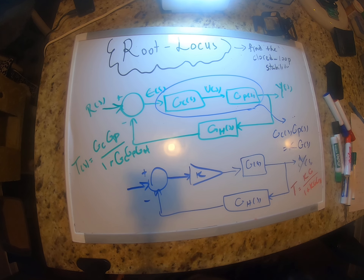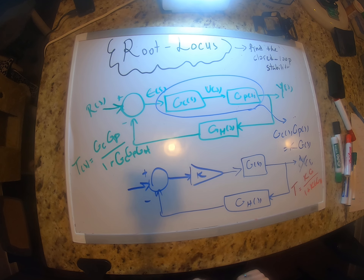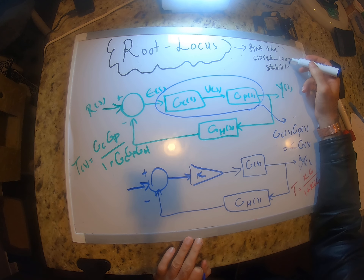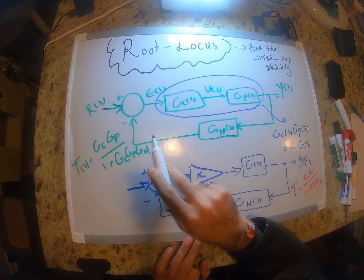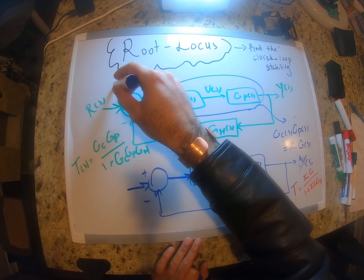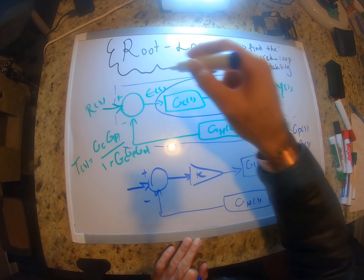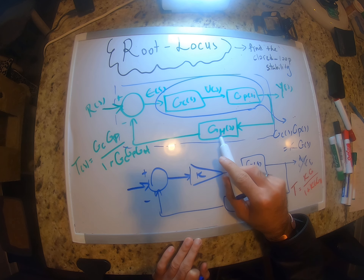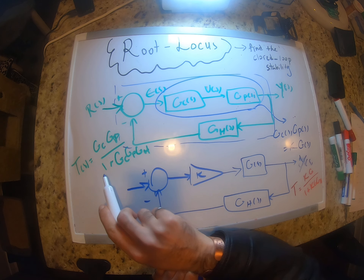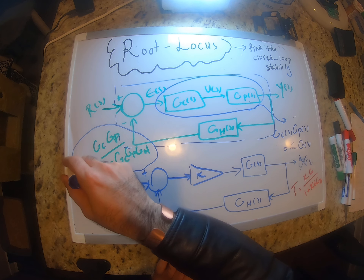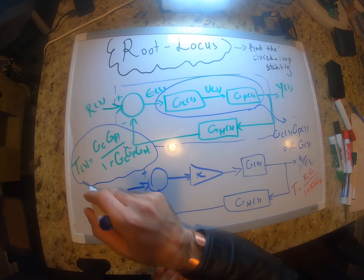Let's continue with the Root Locus method. This method is used to find the closed-loop stability margin. Let's go over a closed-loop system as discussed before — we have the plant transfer function, the controller transfer function, and the sensor or measurement transfer function. We can find the closed-loop transfer function as Gc·Gp divided by one plus Gc·Gp·GH. Now let's combine Gc and Gp together into a single bigger transfer function Gc(s)·Gp(s).